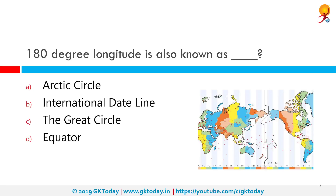180 degree longitude is also known as the International Date Line. The International Date Line, established in 1884, passes through the mid-Pacific Ocean and roughly follows the 180 degrees longitude north-south line on the Earth. It is located halfway around the world from the prime meridian, which is zero degrees longitude established at Greenwich, England in 1852. The line deviates at certain places to maintain a single date within a single country or island.